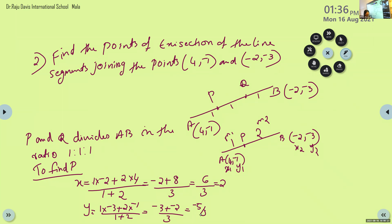Now to find coordinates of Q: draw another rough figure. A(4, -1), B(-2, -3). Q divides AB in the ratio 2:1. Using the section formula, X = (2×(-2) + 1×4) / (2+1) = 0 and Y = -7/3. So Q is (0, -7/3). Therefore, the points of trisection are (2, -5/3) and (0, -7/3).